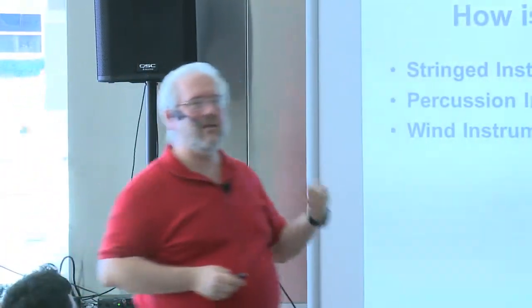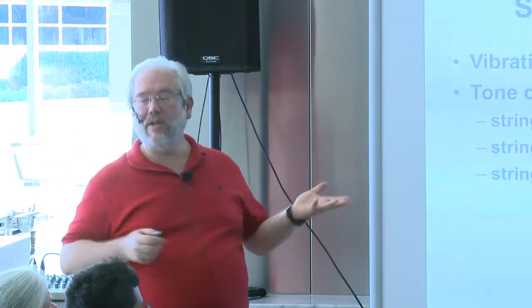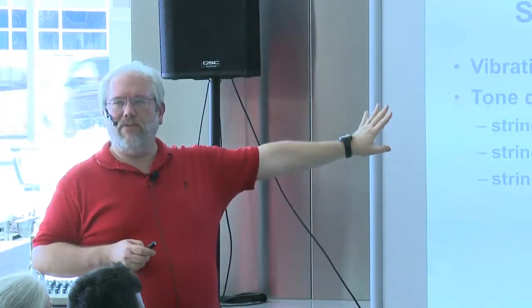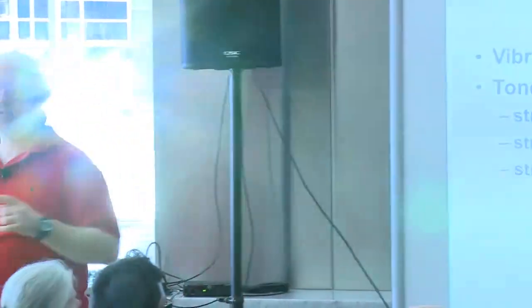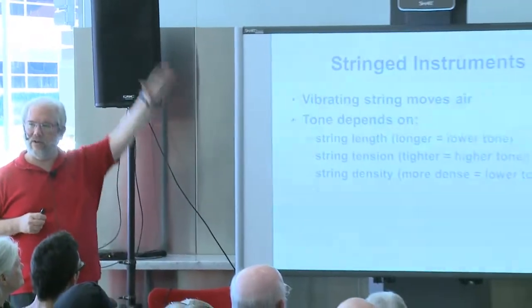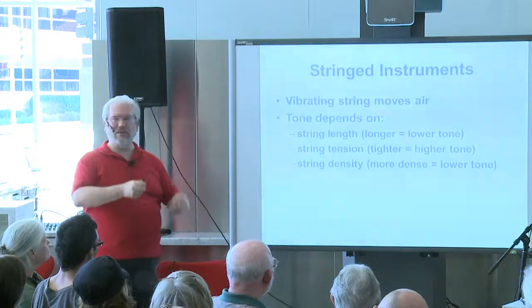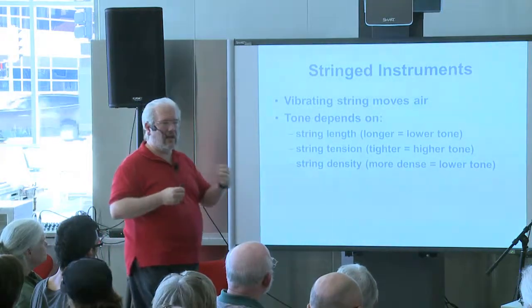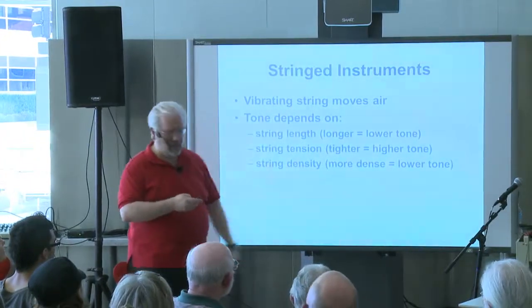How music is made — you've got three basic ways: stringed instruments, percussion instruments, and wind instruments. With stringed instruments, you've got a vibrating string moving in the air. Pressure waves are created as the string moves back and forth. There are some very basic mathematical equations you can use to figure out the exact tone of a string. In general, they depend on three things: the length of the string — the longer the string, the lower the tone; string tension — if you tighten the string, the tone shifts higher; and string density — a lighter string moves faster, a denser string moves more slowly, giving a lower tone.